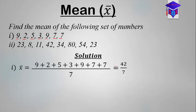Doing that arithmetic gives us 42 over 7, which simplifies to give us 6. So the mean X̄ is equal to 6.